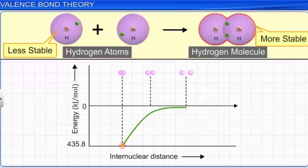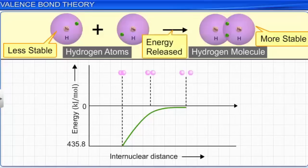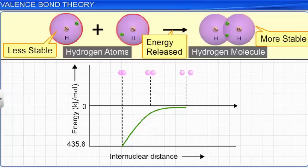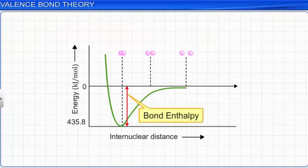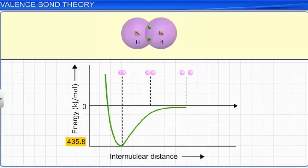If we try to bring the atoms still closer, the repulsive forces start overpowering the attractive forces. Consequently, the energy of the system increases, causing instability. As energy is released during the formation of the bond between the two hydrogen atoms, the hydrogen molecule is more stable than the isolated atoms. The energy released is called the bond enthalpy, which corresponds to the minimum shown in the figure. The same amount of energy is required to dissociate one molecule of hydrogen.